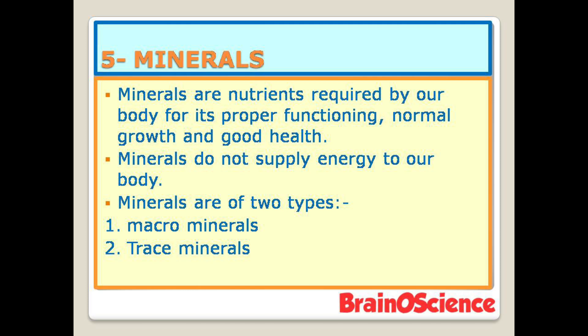The fifth nutrient is minerals. Minerals are nutrients required by our body for proper functioning, normal growth, and good health. Minerals do not supply energy to our body. Minerals are of two types: macrominerals and trace minerals. Examples of macrominerals are calcium and phosphorus; examples of trace minerals are iodine and iron.